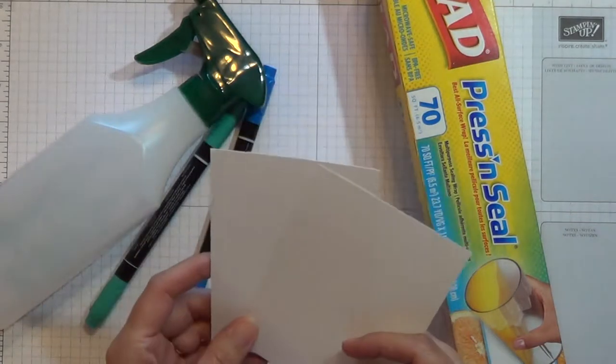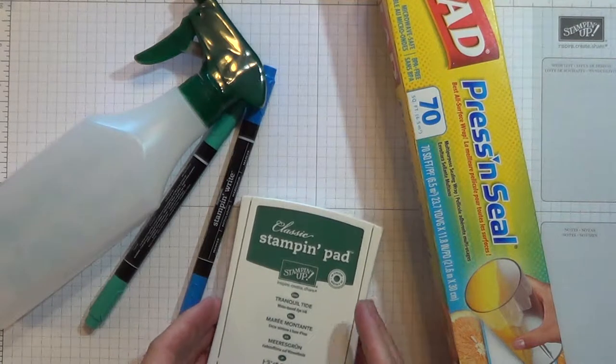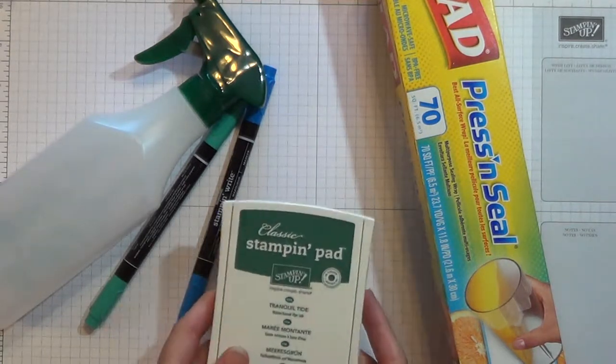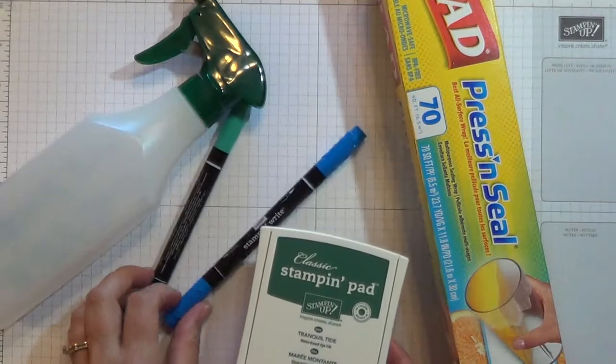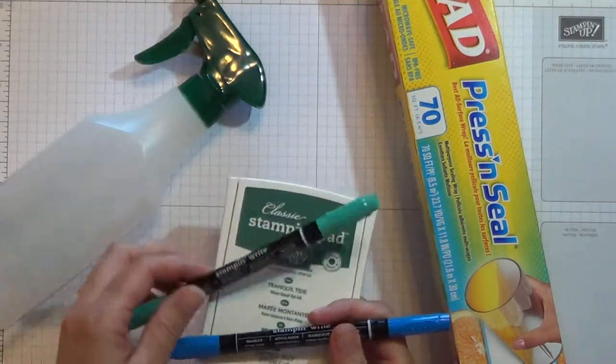So I got the idea for this technique. I've done it before but it's been a while. I was on a trip recently in the islands and so I wanted to do something watery. So I have a couple of colors here. Tranquil Tide, Pacific Point and Bermuda Bay.